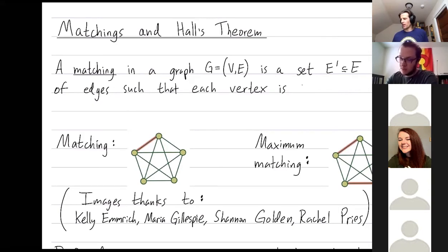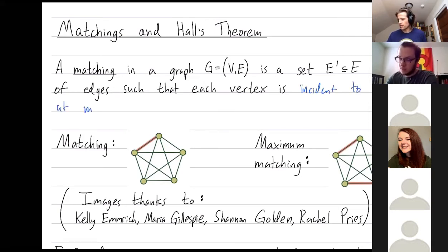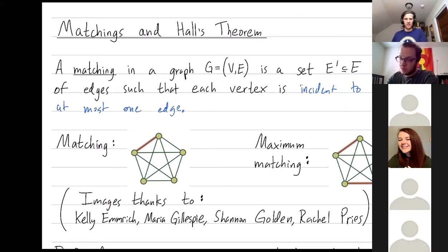Let me tell you what a matching in a graph is. It's a collection of edges such that each vertex is incident to at most one edge. The following drawings are compliments of Kelly Emmerich and Shannon Golden, who are in this class, together with Maria Gillespie and Rachel Preece — they're sort of writing an undergraduate combinatorics book.